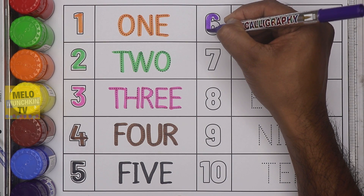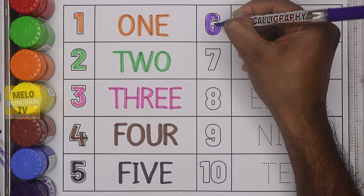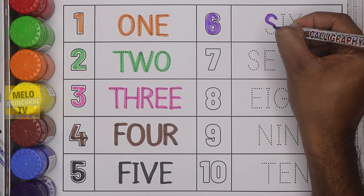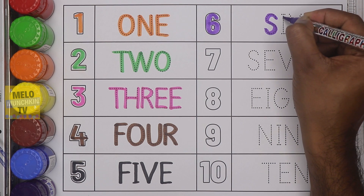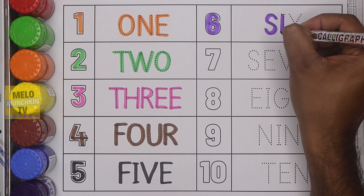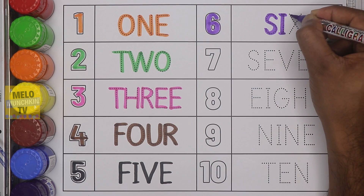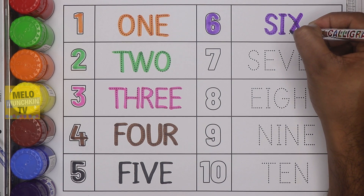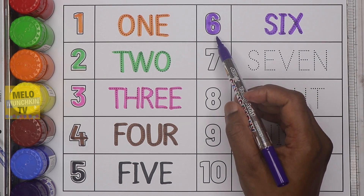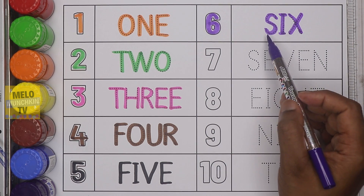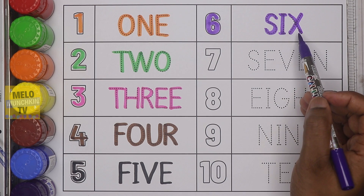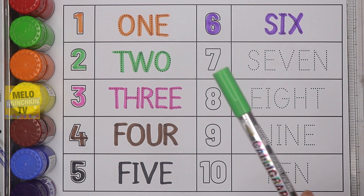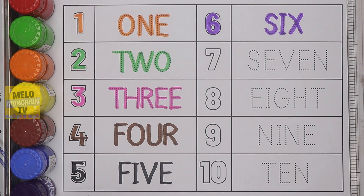Next, I'll take purple color and write number six. This is number six. The spelling is S-I-X, six.